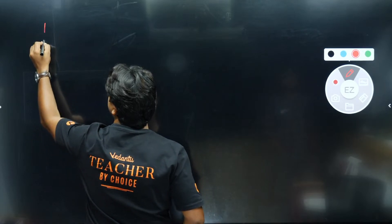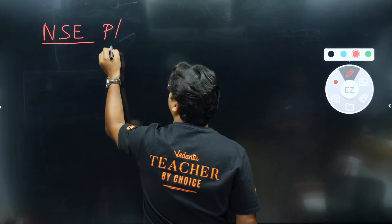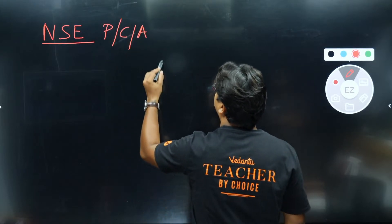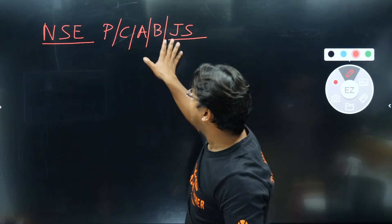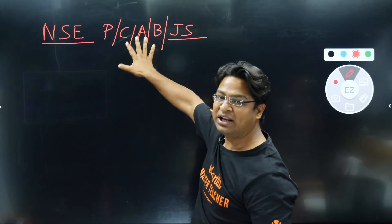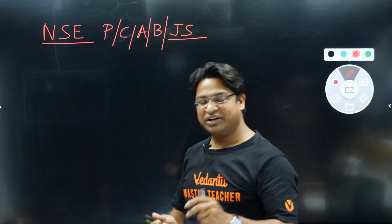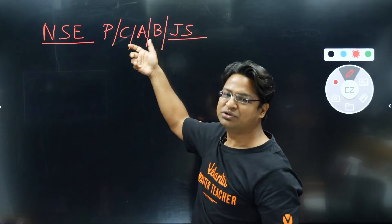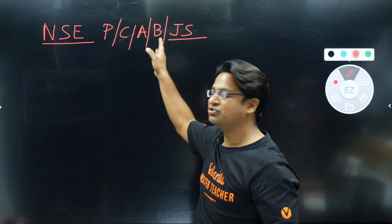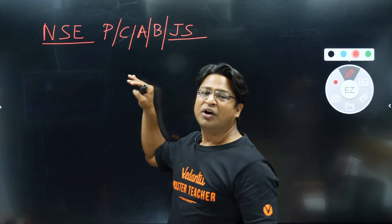NSE stands for National Standard Examination. These happen in Physics, Chemistry, Astronomy, Biology, and Junior Science. Junior Science is for students currently in Grade 8 or 9, while the rest are for students in Grade 10, 11, or 12. The criteria is age-based, but generally Grade 8–9 students are eligible for Junior Science, and from Grade 10 onwards students become eligible for the other NSEs.